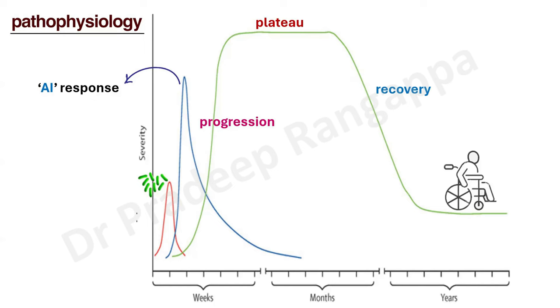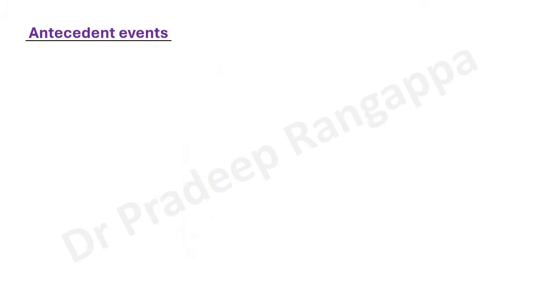So the three phases are: the infective phase, the autoimmune phase, and the disease progression reaching plateau and recovery — with some continuing to have residual disability even for years.